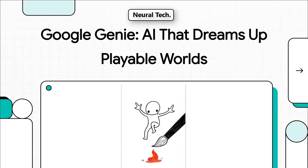Welcome to The Explainer. Today, we're diving into something that feels like it's straight out of science fiction. We're talking about Google's new AI model, Genie. And this isn't about just generating another image or a block of text. This is about creating entire playable, interactive worlds from a single prompt. This isn't just another step forward for generative AI — it's a massive leap into a whole new dimension.